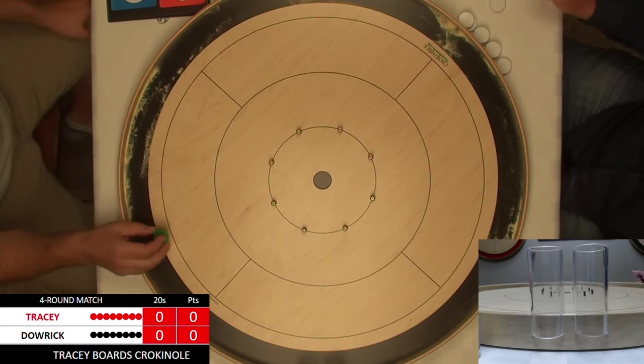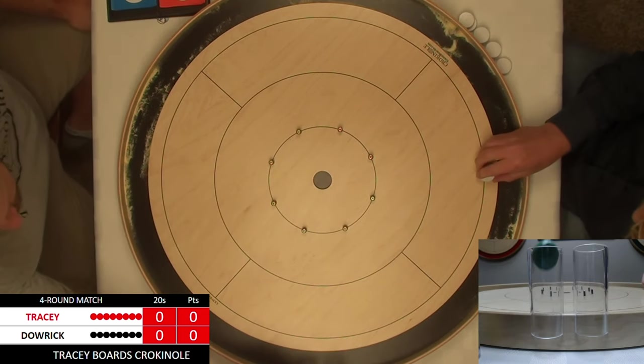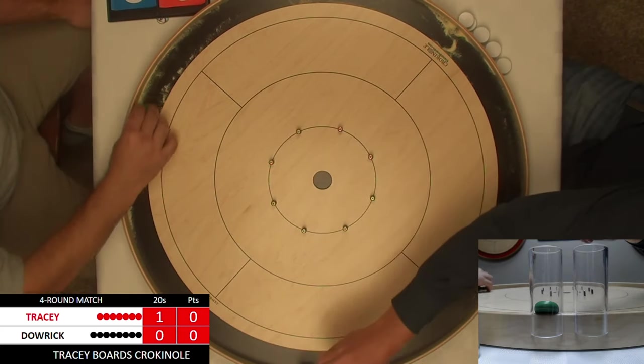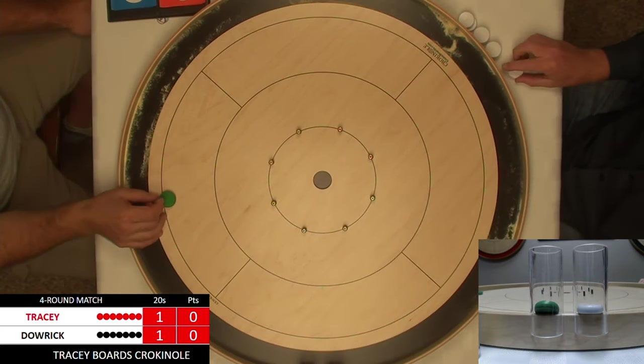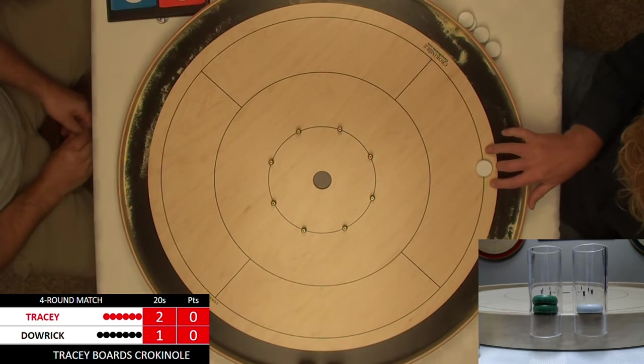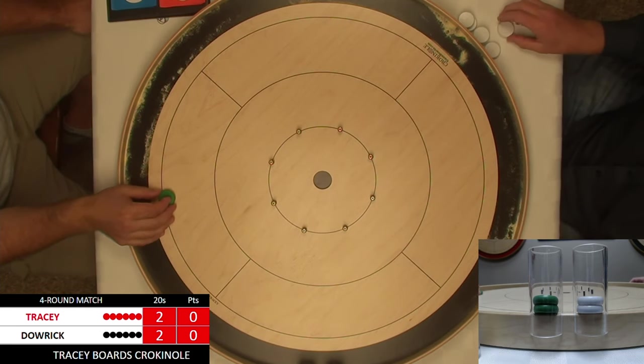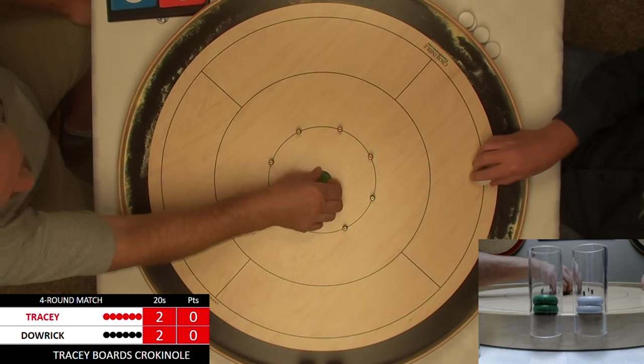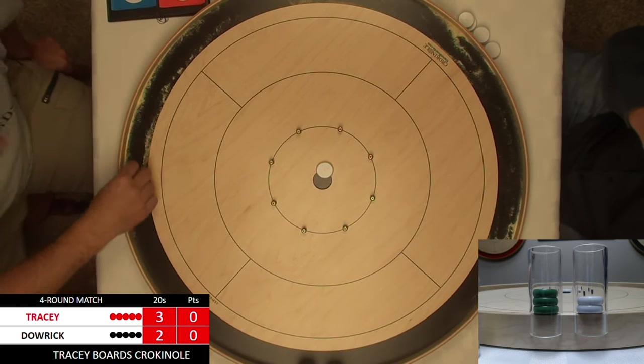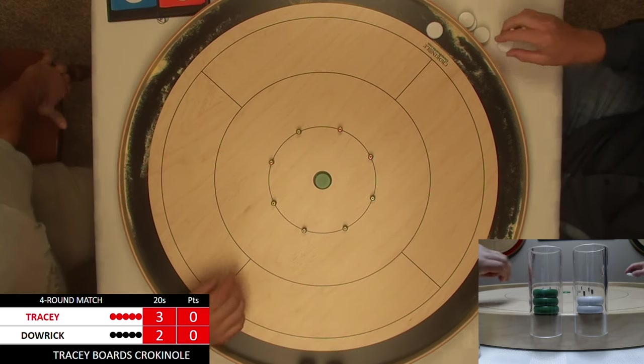Welcome back to match number two between Jeremy Tracy and Simon Dowrick. The way we do things here in the Battle of the Basement is that whoever wins one game, they start the next game, which in essence gives the other person the hammer advantage in that first round. That's just how we do it here in the Tracy household. In that first match, Jeremy pulled out a victory five to three in their four-round battle, and now we're off to a good start in the second match.